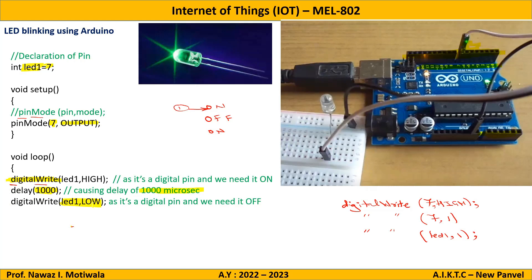All four syntax options serve the same purpose. Now again we have to keep the LED off for some time, so we give another delay: delay(1000). This command gives a delay of 1000 milliseconds — that is one second — meaning the LED will be off for one second.